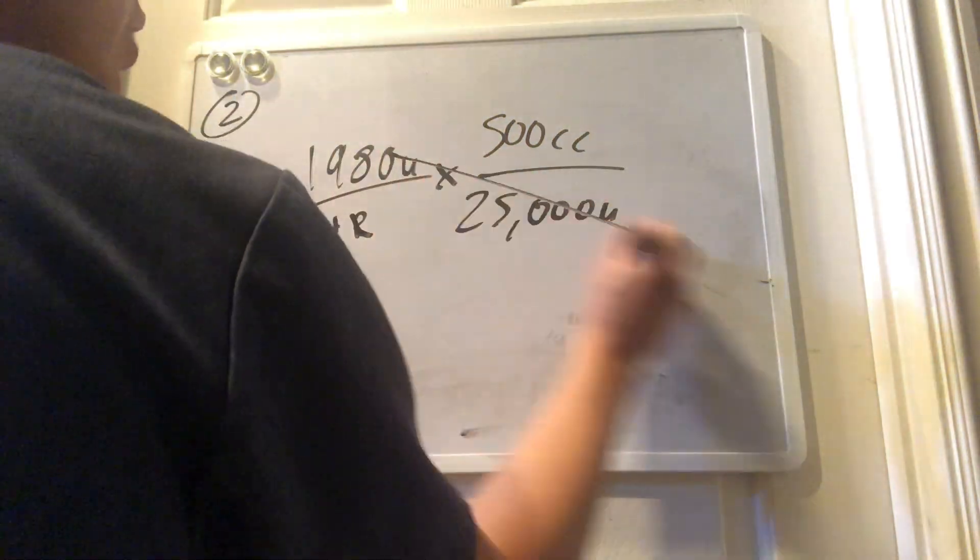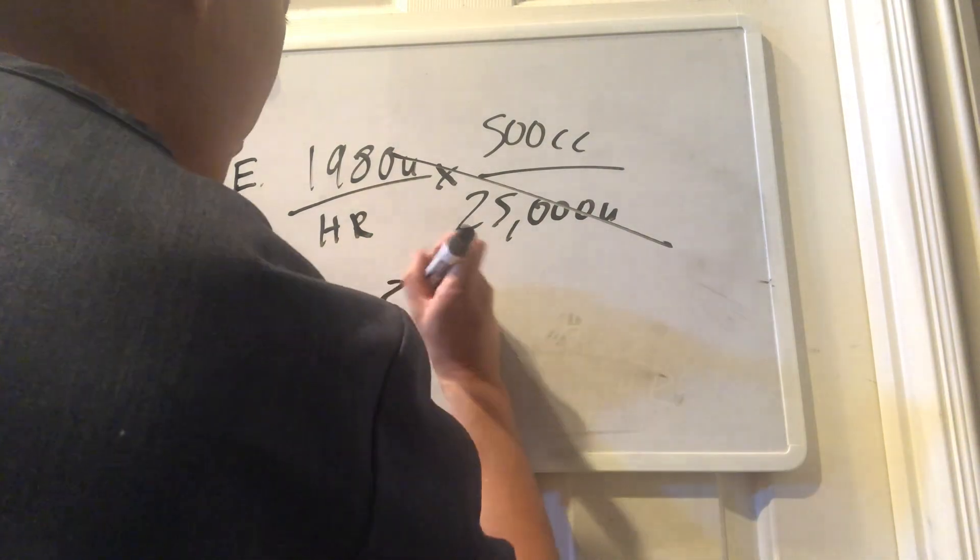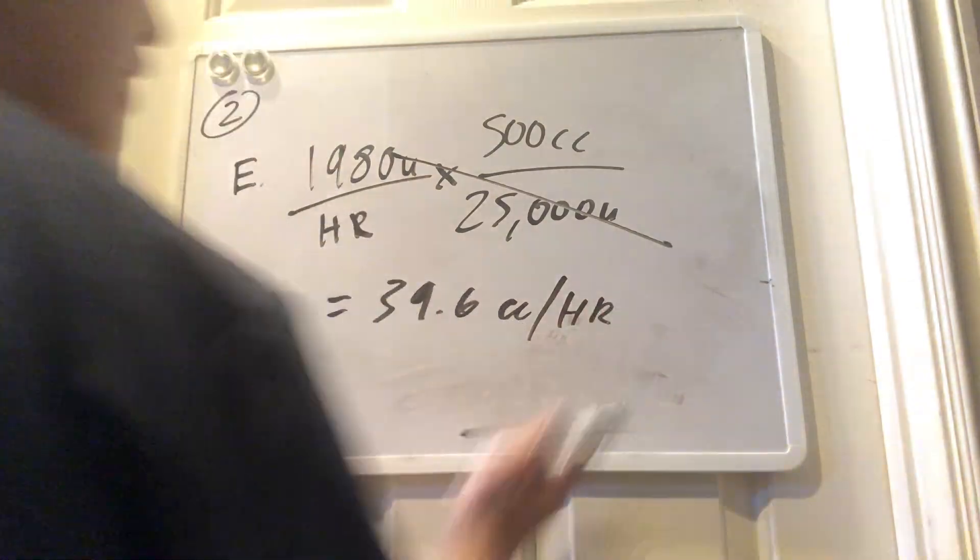which is the 25,000 units and 500 cc's of D5W, we cross out the units, so we're left with cc's an hour, we're going to end up getting about 39.6 cc's an hour for that new infusion rate.